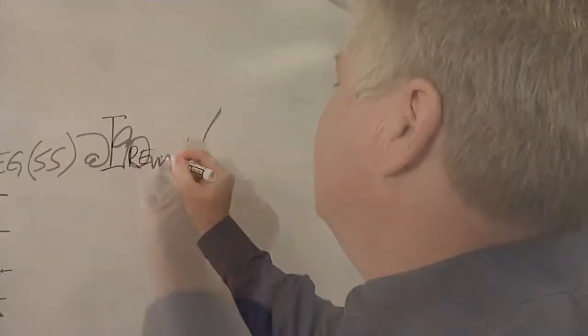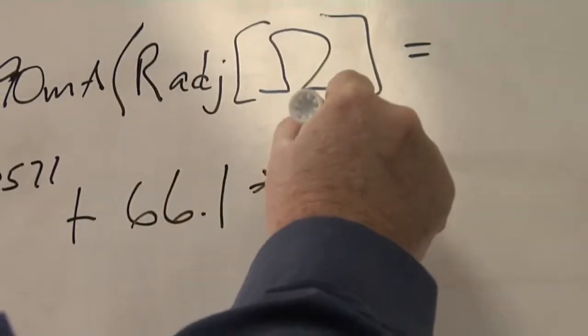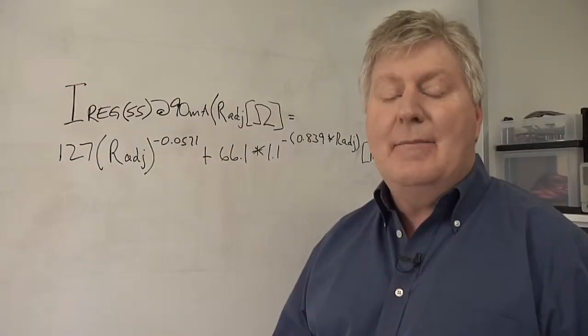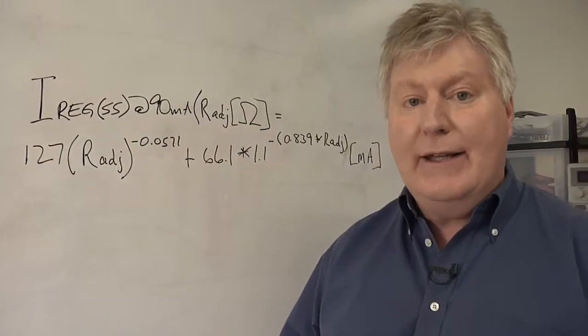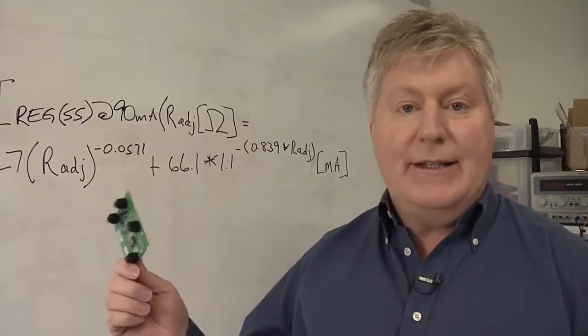There's a couple of ways we can do this. Let's start with the hard approach first. You can use the theoretical method in this formula. This formula is based on a model where a constant current regulator is mounted on an FR4 printed circuit board like this.